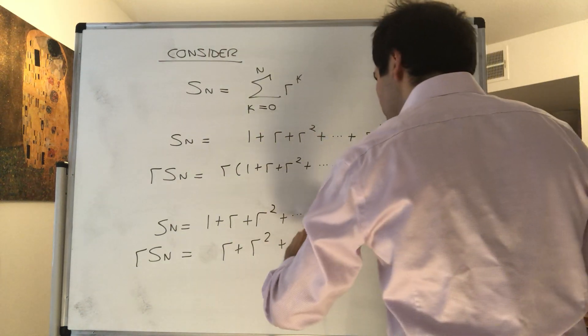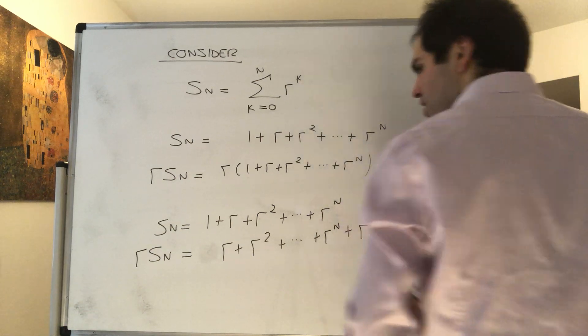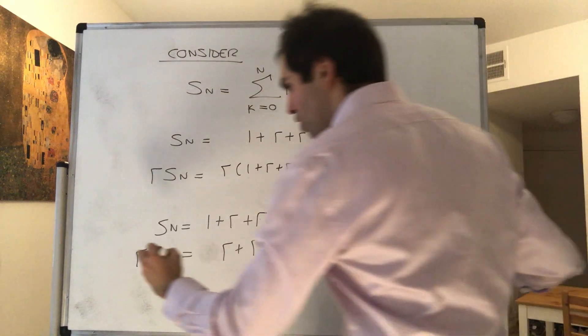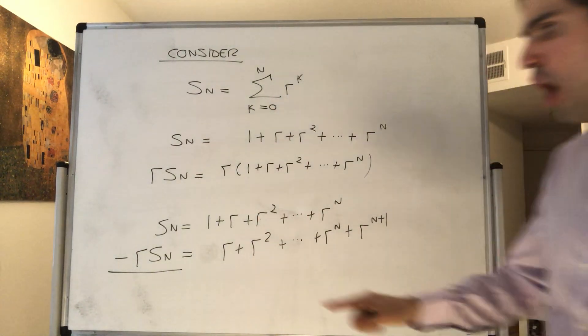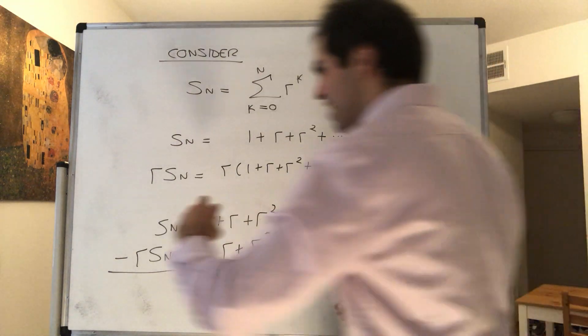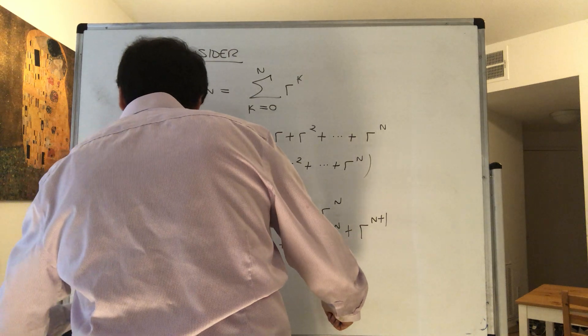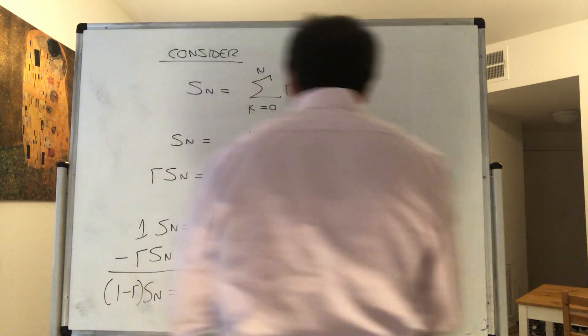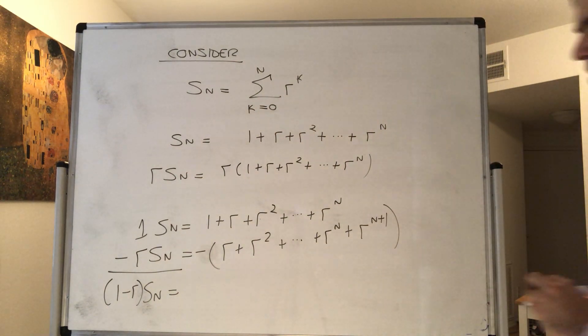On the one hand, consider S_n minus r*S_n, which is the same thing as (1-r)*S_n. On the other hand, subtract this from this. Then what happens?